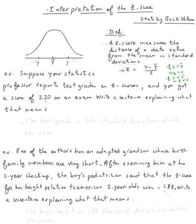it says, suppose your statistics professor reports test grades as z-scores, and you got a z-score of 2.20 on an exam. Write a sentence explaining what that means. So look at the interpretation right here. A z-score measures the distance of a data value from the mean in standard deviations. So what does this tell us?